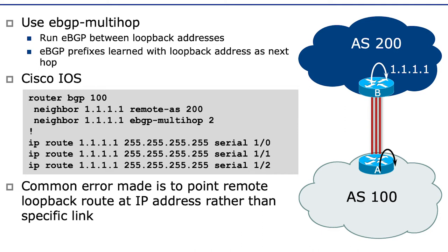So instead, we run eBGP on the loopback address. Of course, the loopback interface on router A is not directly connected to the loopback interface on router B. And one of the requirements for eBGP is that the interfaces are directly connected.